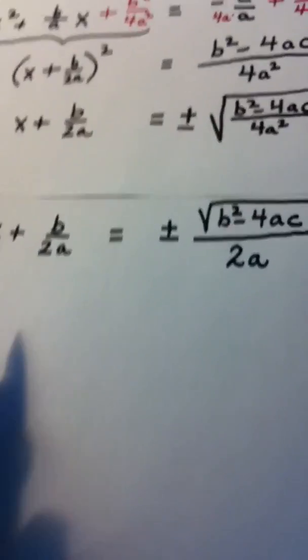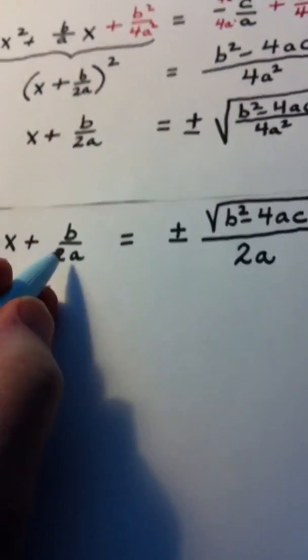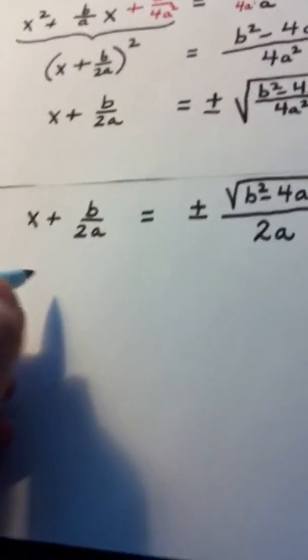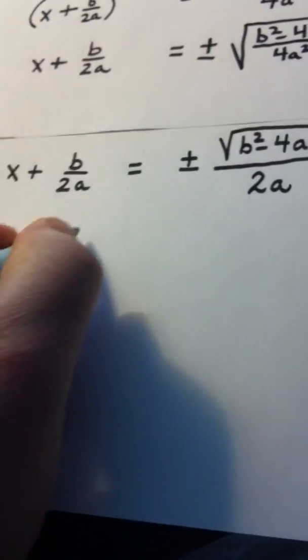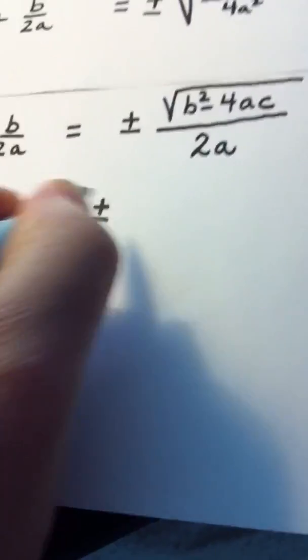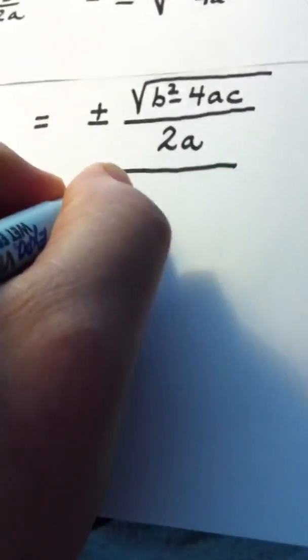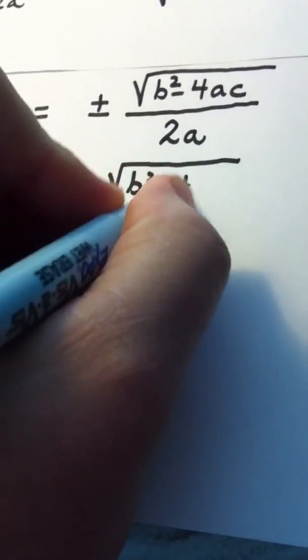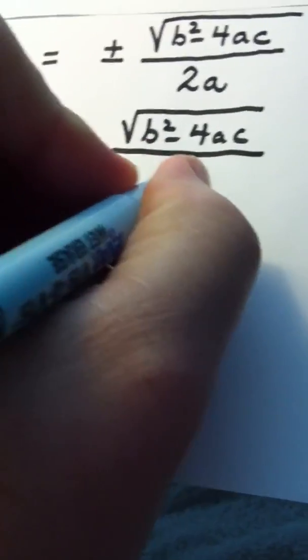Okay, let's continue. To get x alone, I'm going to subtract b over 2a from both sides. So x equals the opposite of b over 2a plus or minus the square root of b squared minus 4ac all over 2a.